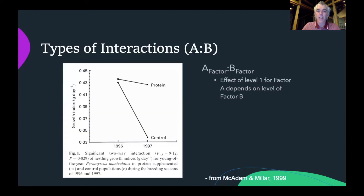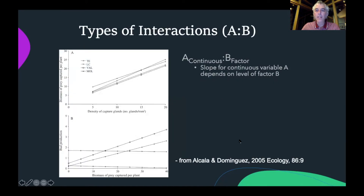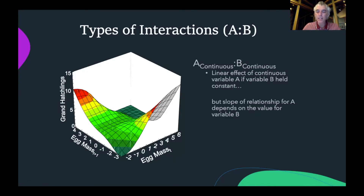We can have lots of different types of statistical interactions. We can have interactions between two factors where the effect of one level depends on what the level is for the other factor, as shown in an interaction plot. We can also have interactions between continuous and categorical predictors, where a continuous effect represented by some slope might differ between two levels of some other factor B. Finally, we can have interactions between two continuous variables where the slope changes continuously across the levels of some other continuous predictor.